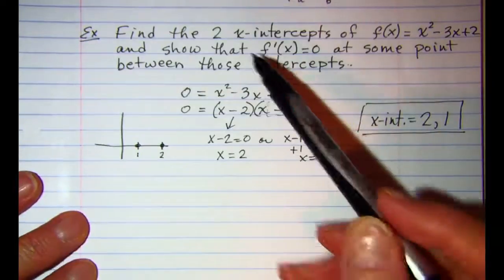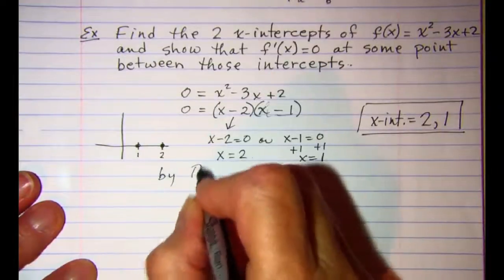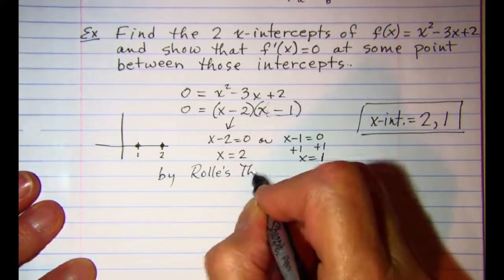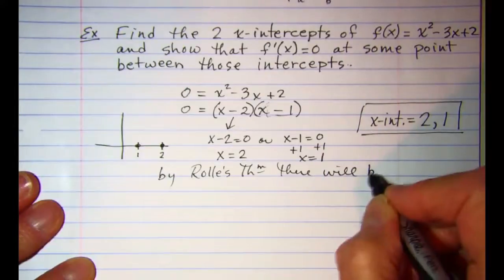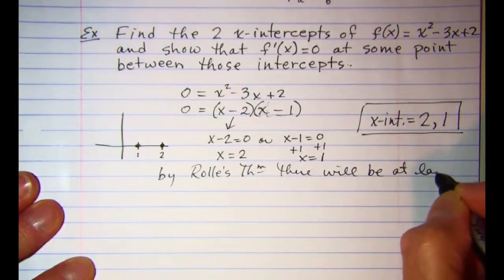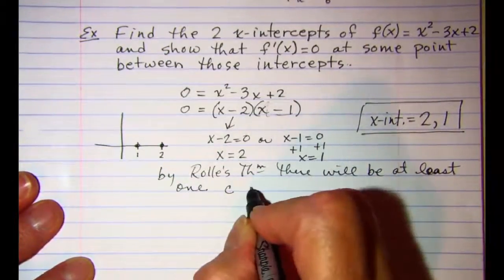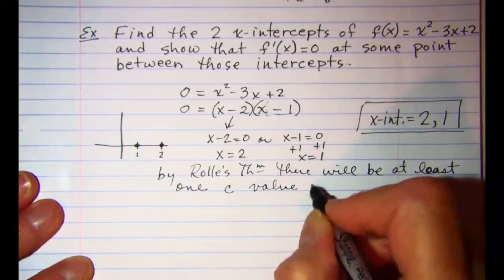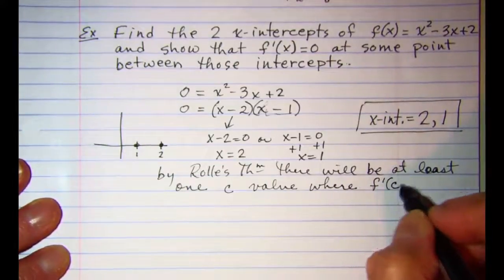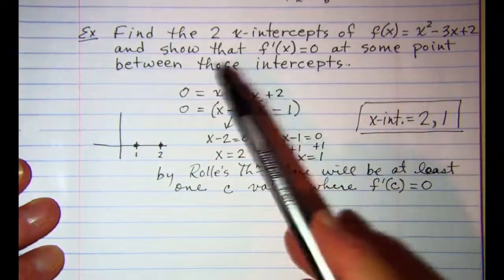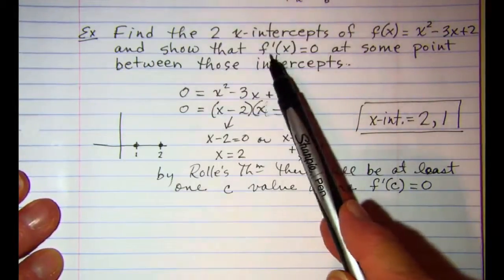We know that there's going to be at least one point where f prime c is equal to zero. Now let me point out that it doesn't say to find it but we can find it and that'll show that it does occur.